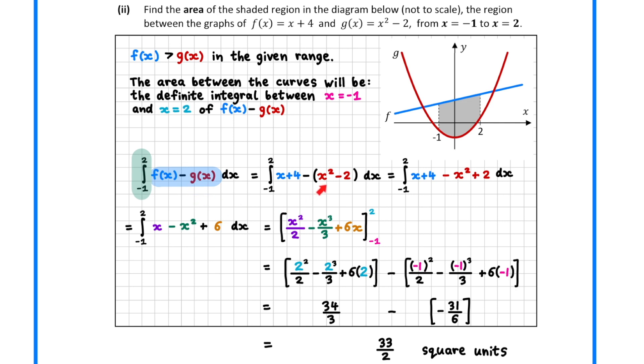f(x) minus g(x) simplifies down to x minus x squared plus 6. We integrate this expression and sub in the upper bound of 2.